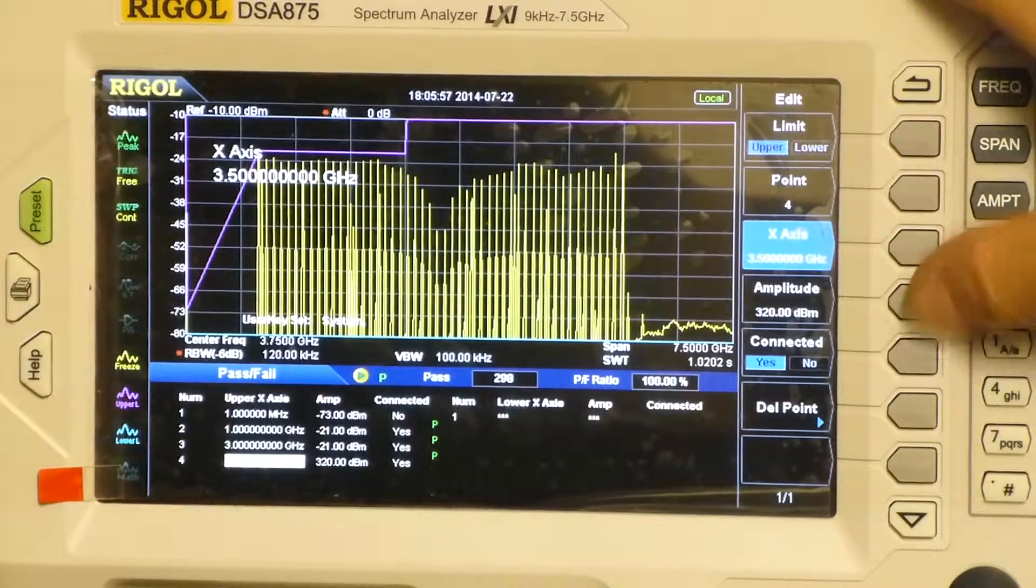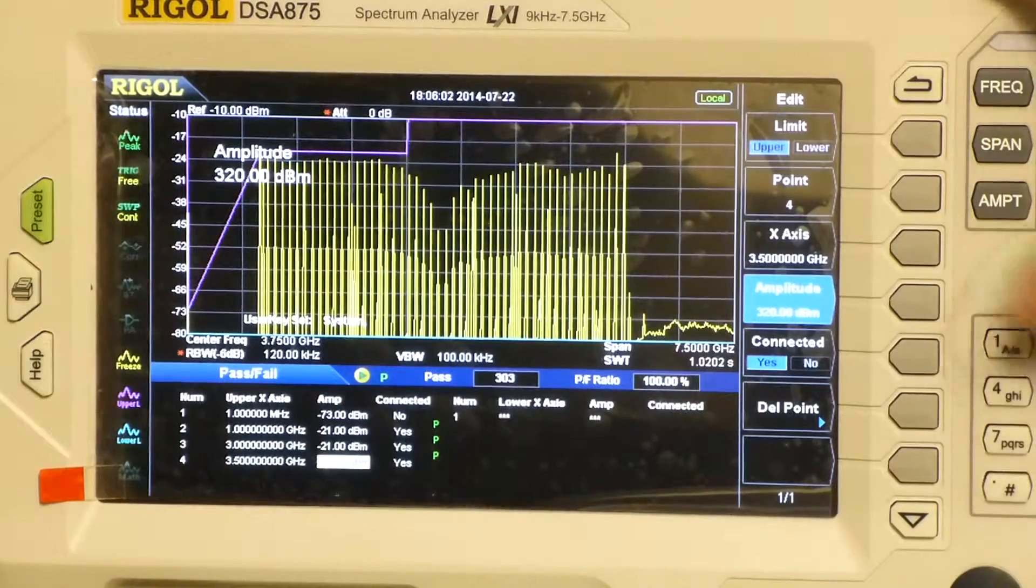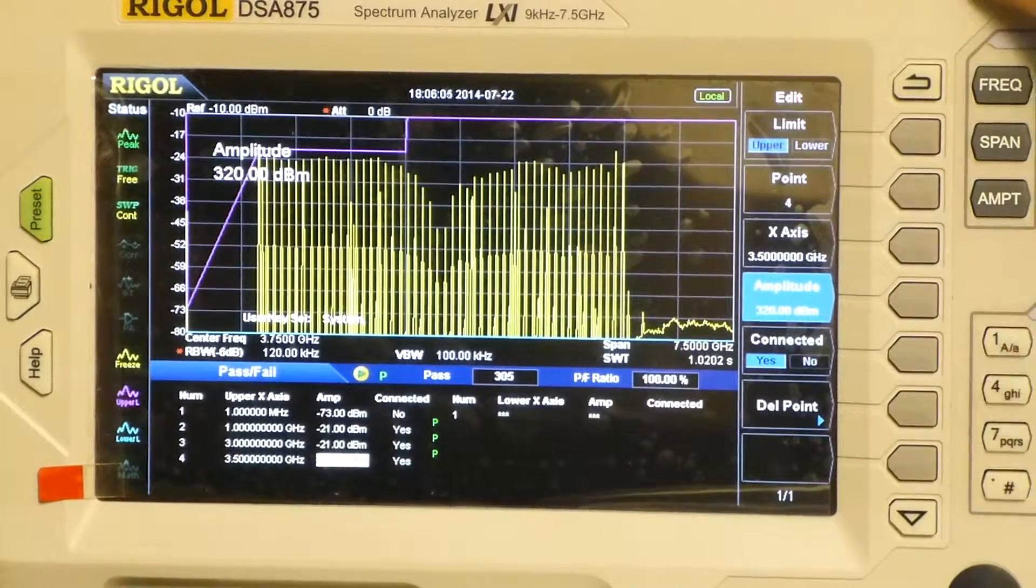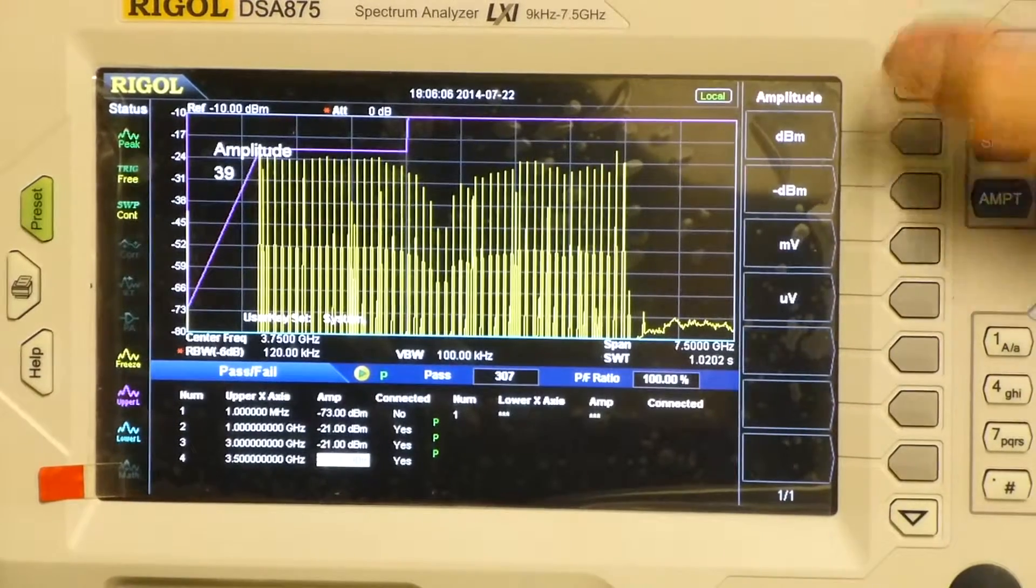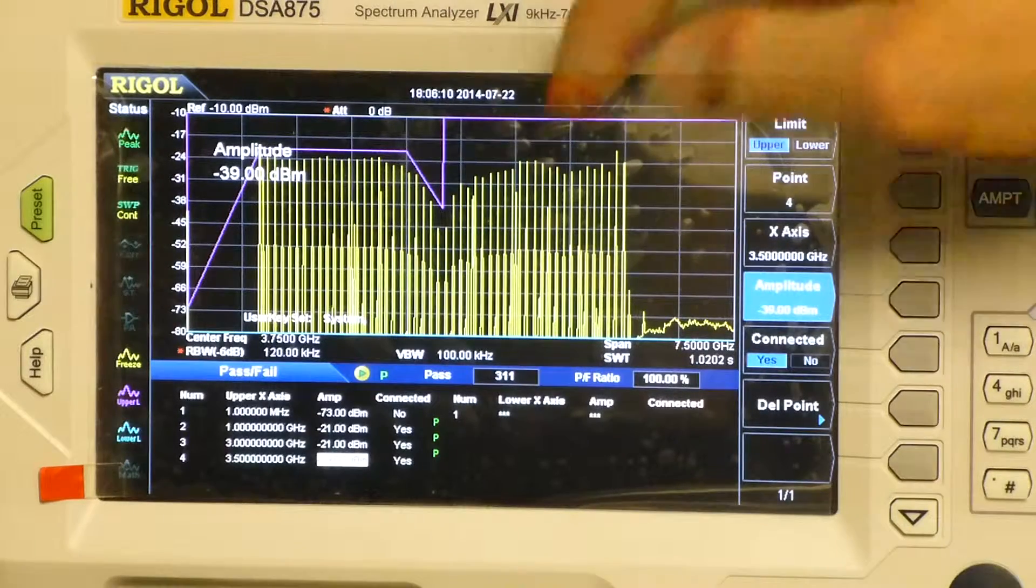and it will be at minus 34 dBm, or minus, let's say minus 39, go on, why not, negative 39 dBm. Now you can see immediately I've now added another notch to that profile.